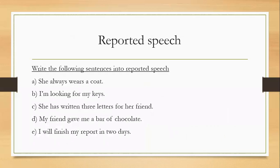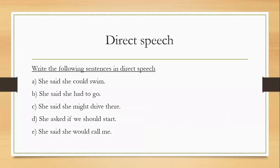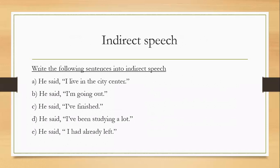Now we are starting with your activities. The first activity — reported speech: write the following sentences into reported speech, number A to E. The second activity — direct speech: write the following sentences into direct speech. Remember to use a comma, quotation marks, and a full stop — also number A to E. The last activity — indirect speech: write the following sentences into indirect speech. Remember you only use a full stop, remove your commas and quotation marks, and insert the word 'that.' Look at number A: he said, quotation mark, 'I live in the city center,' full stop, end quotation marks.